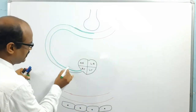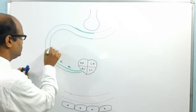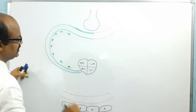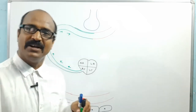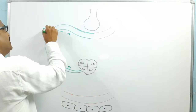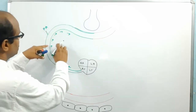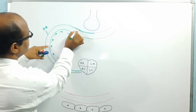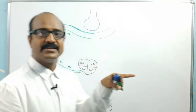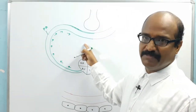The blood carried by the pulmonary artery to the lungs is deoxygenated blood. Deoxygenated blood means there is a low concentration of oxygen but a high concentration of carbon dioxide present.